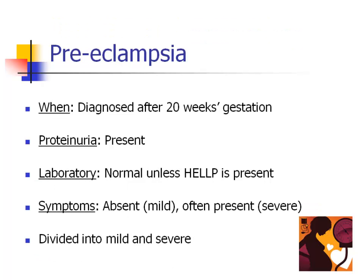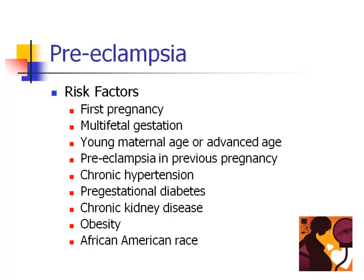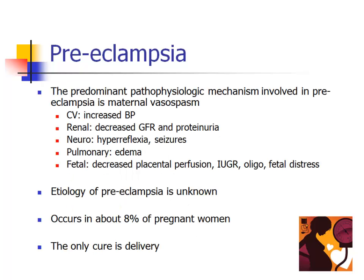Pre-eclampsia is diagnosed after 20 weeks of gestation and comprises persistently elevated blood pressure, proteinuria, and sometimes changes in laboratory values or the presence of symptoms. Pre-eclampsia is divided into mild and severe forms. Risk factors for pre-eclampsia are listed here. The etiology of pre-eclampsia is unknown; however, we do know that the pathophysiology involved is maternal vasospasm throughout the body. This vasospasm causes a variety of signs and symptoms, some of which are listed here. Pre-eclampsia is a common condition that occurs in up to 8% of women. The only cure is delivery of the baby.